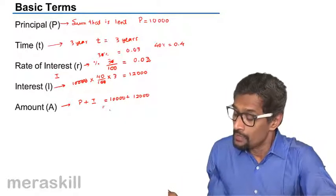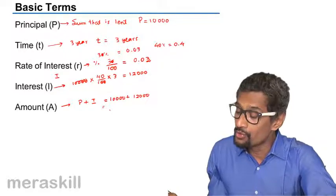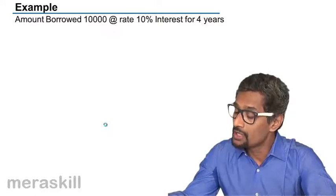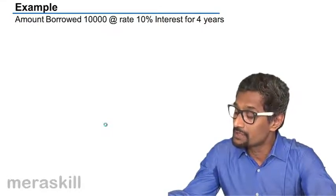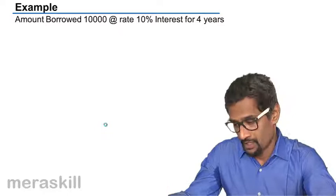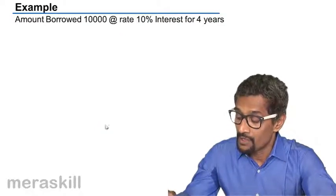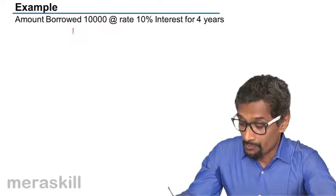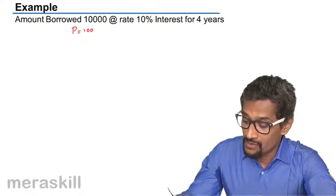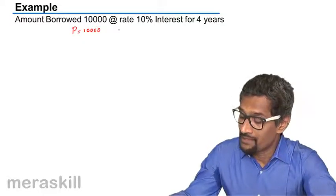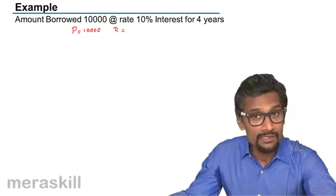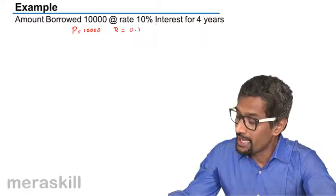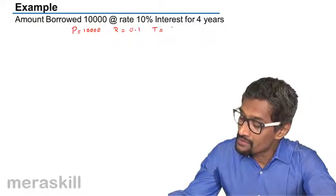Furthermore, now let's actually go to an example. Amount borrowed 10,000 at the rate of 10% interest for four years. So the principal is 10,000 and rate is 10% which can be written as 0.1, 10 by 100, and time is four years.